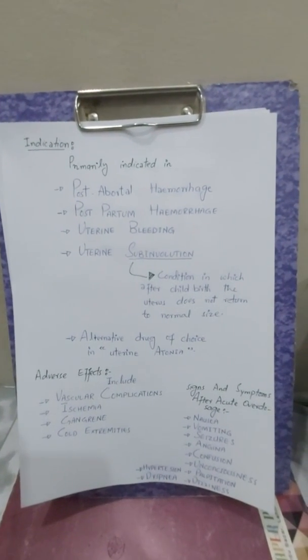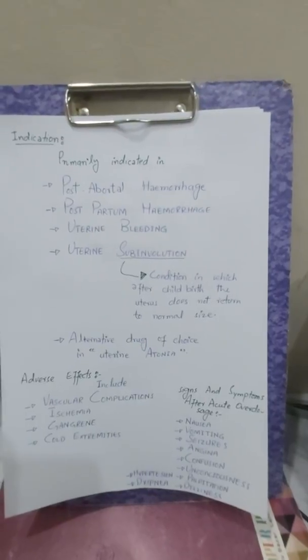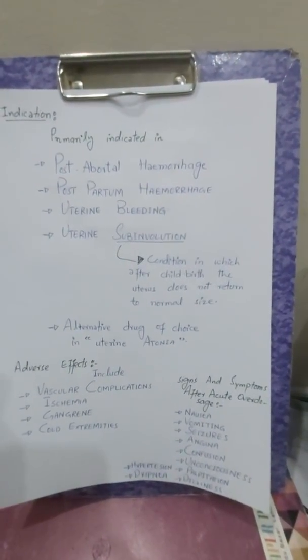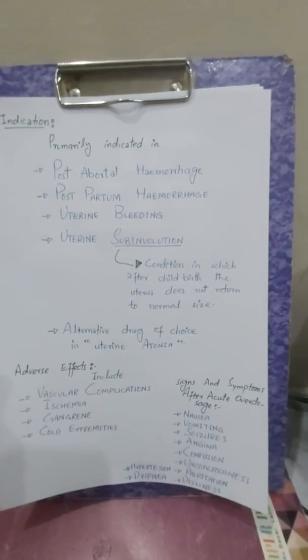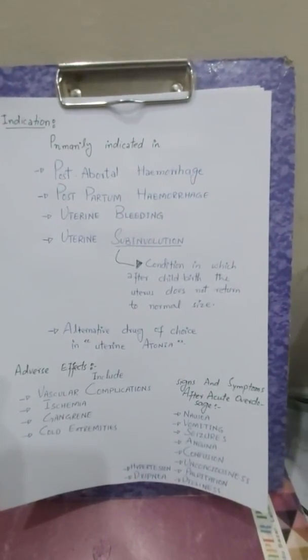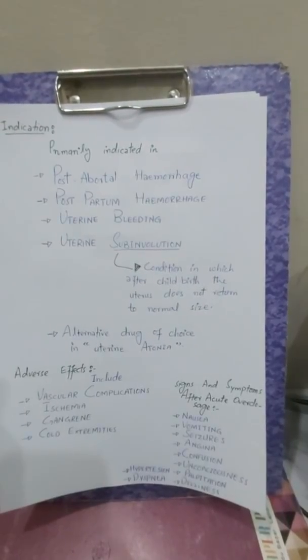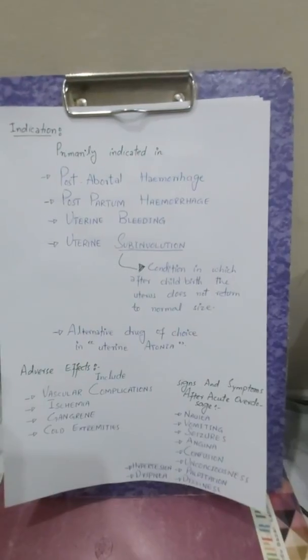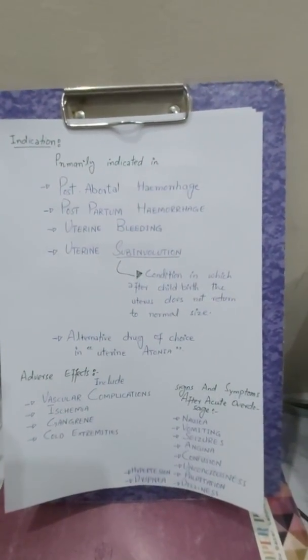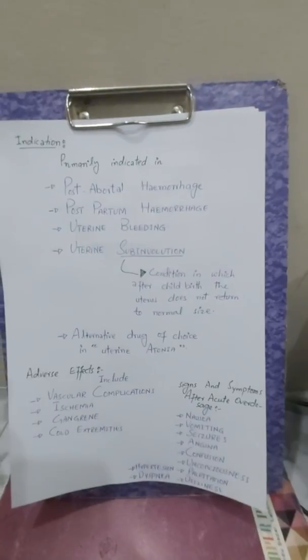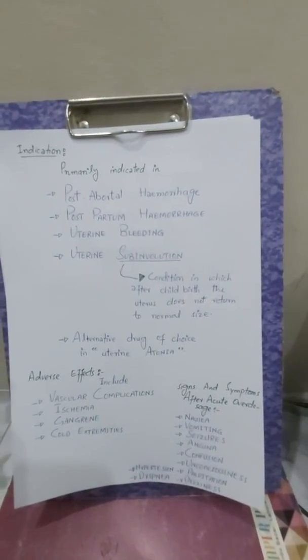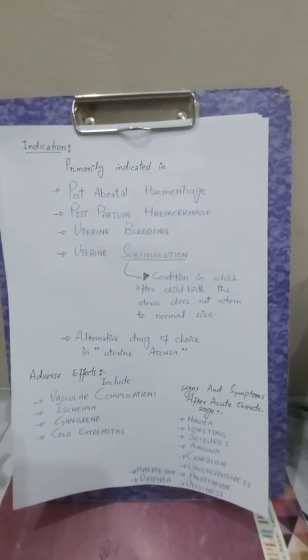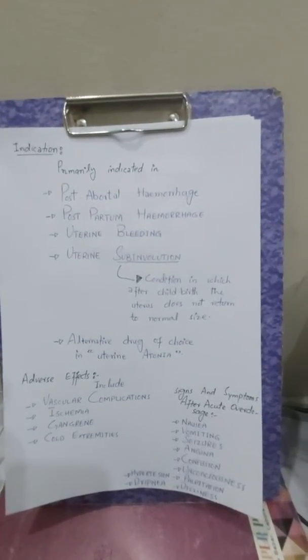If there is acute overdose of methylergometrine, the signs and symptoms include nausea, vomiting, seizures, angina, confusion, unconsciousness, palpitations, dizziness, hypertension, and dyspnea. If we give this drug to a patient and the patient shows these kinds of signs and symptoms, it can be an acute overdose requiring acute withdrawal of this drug.